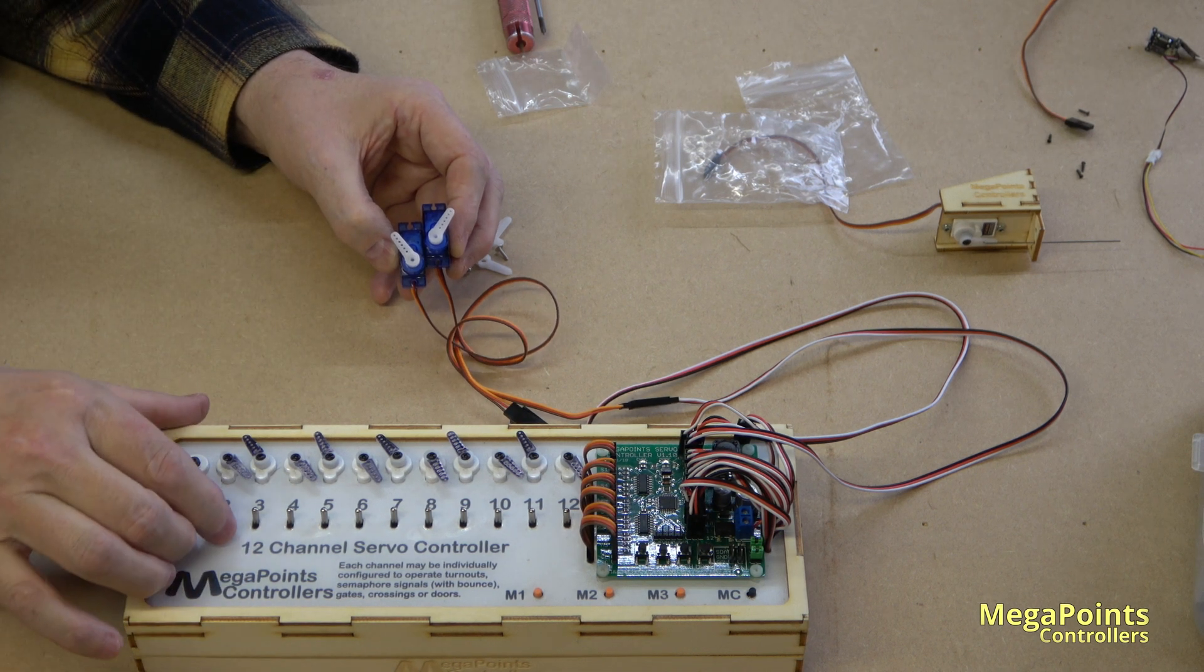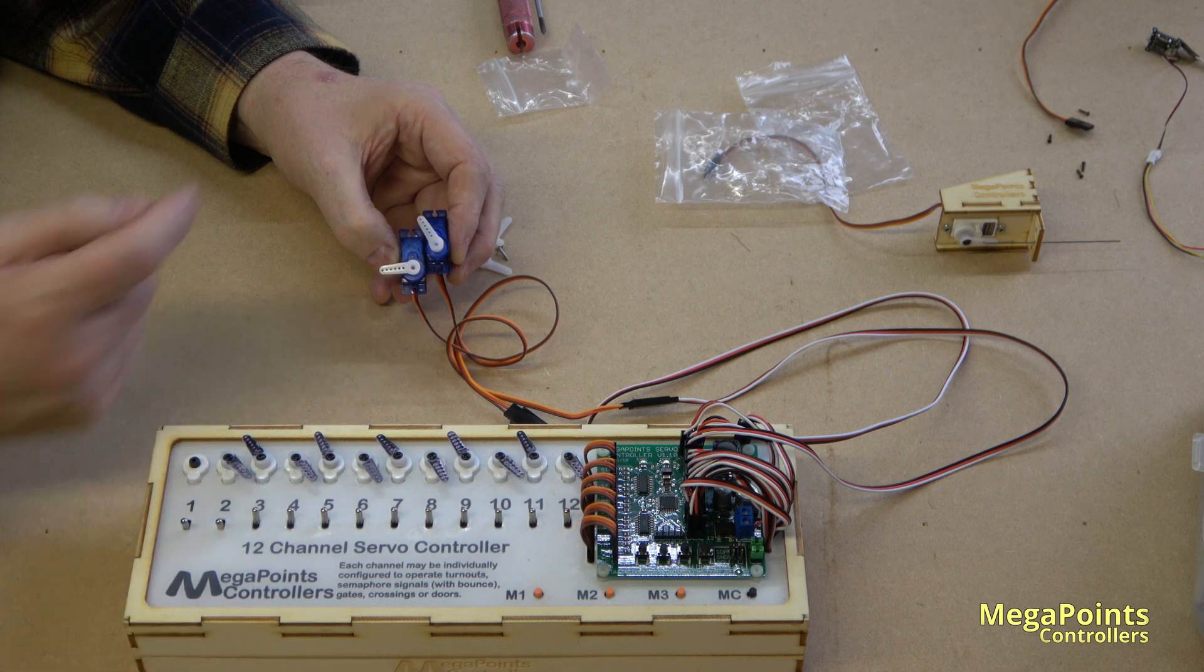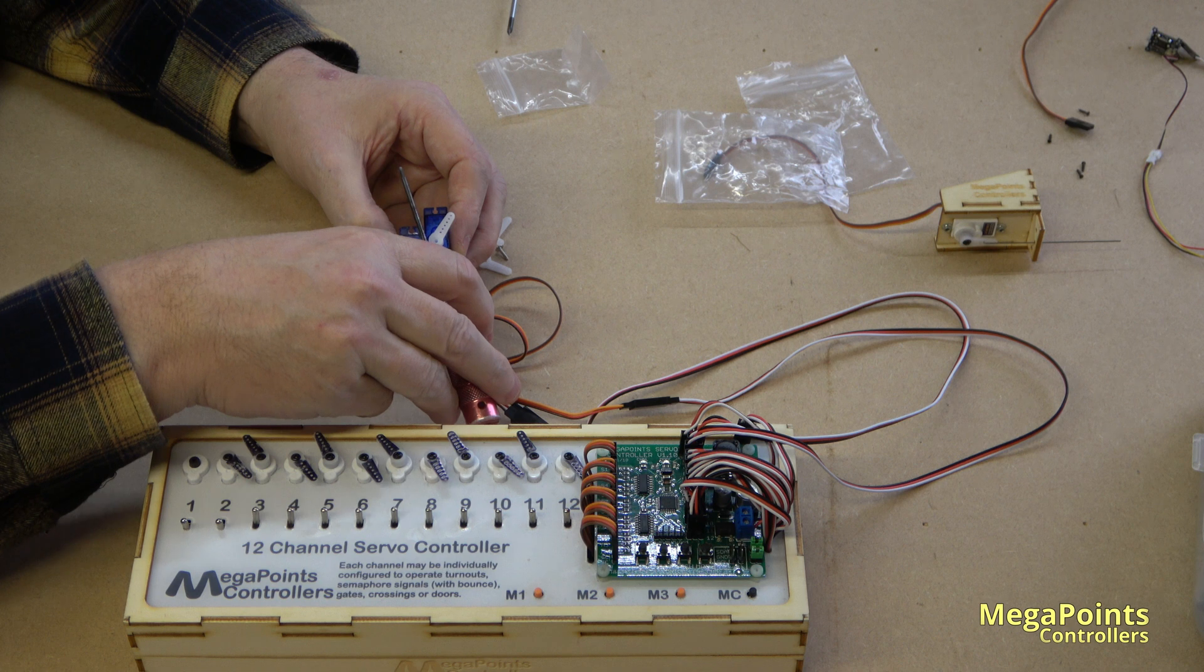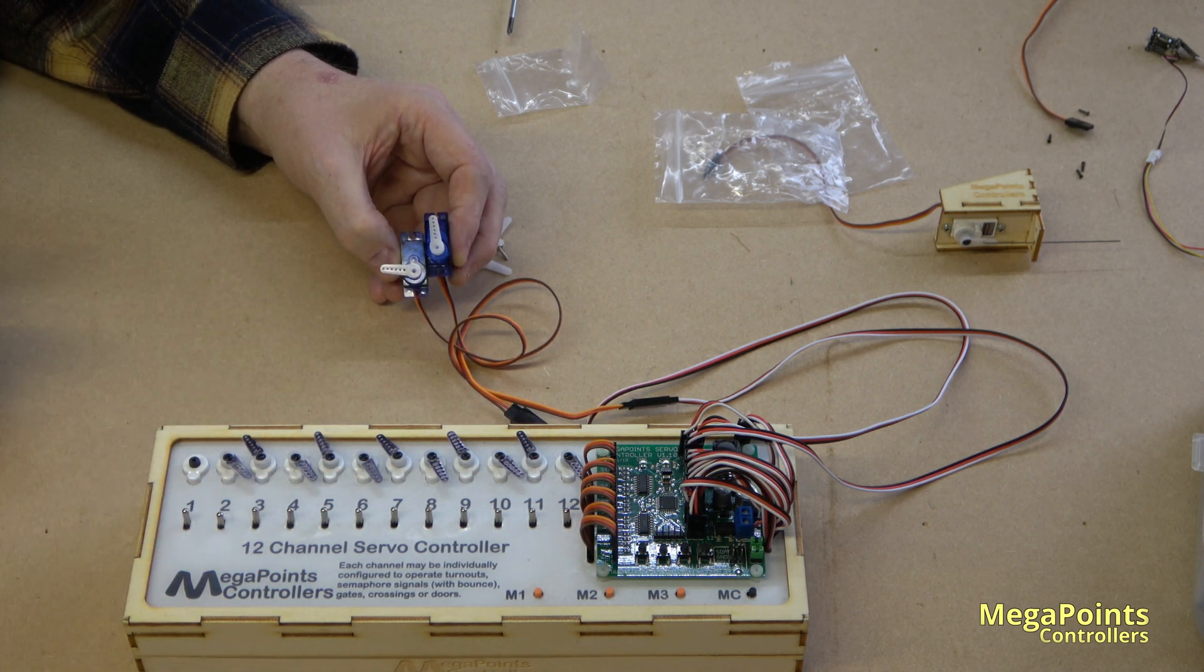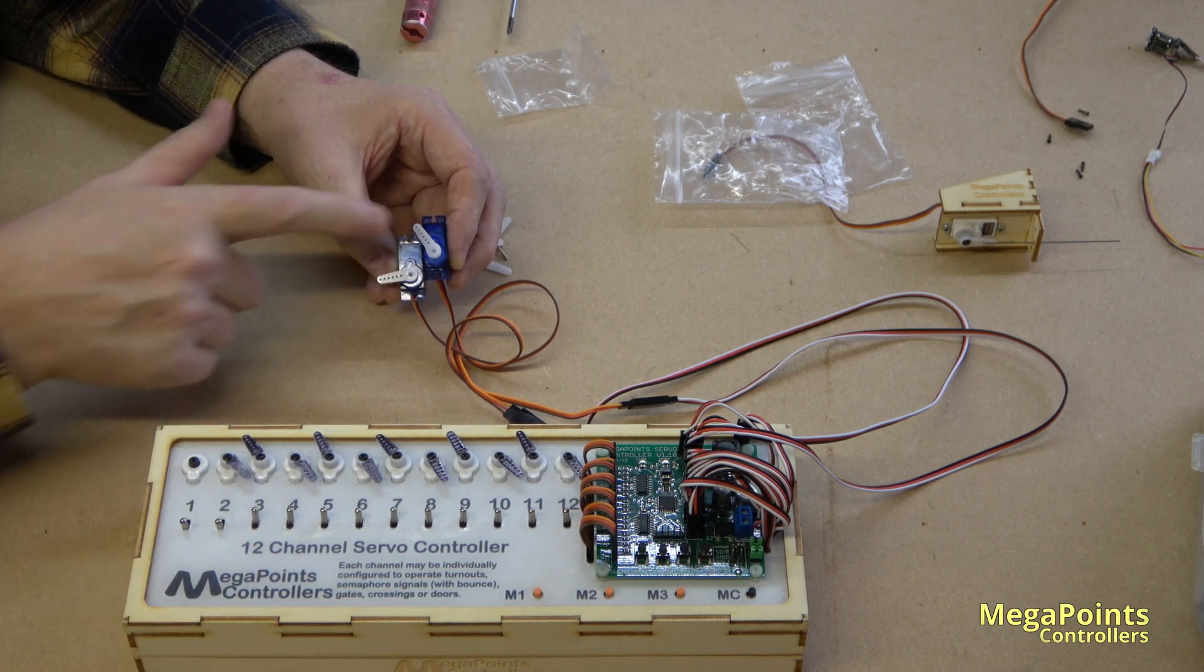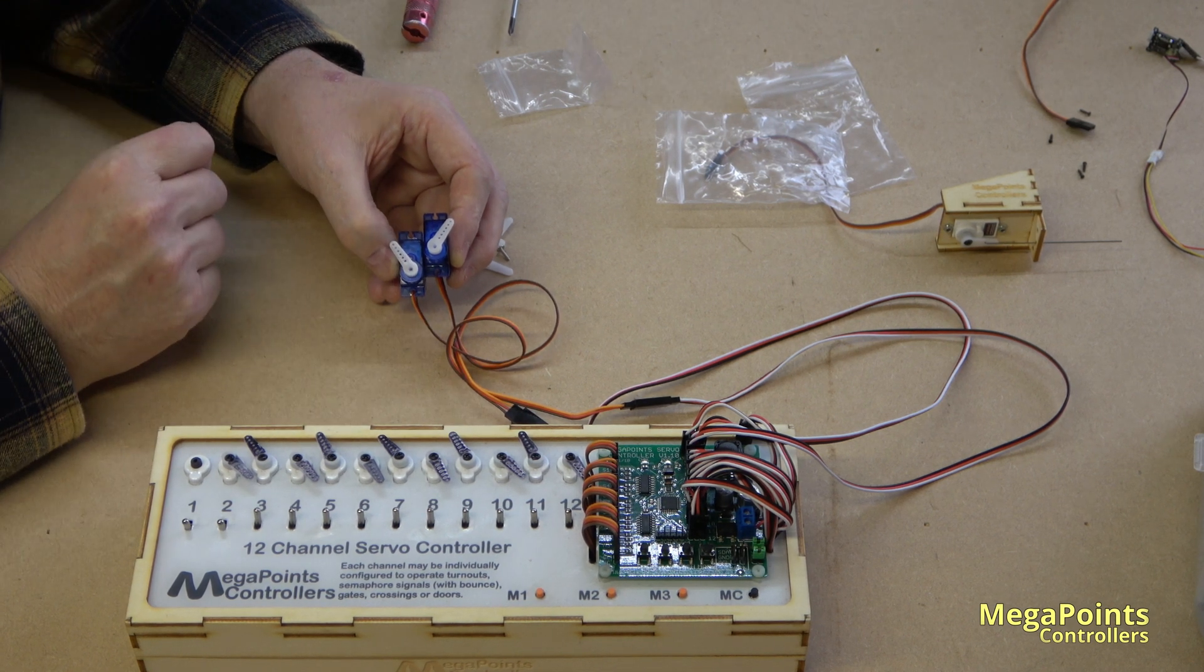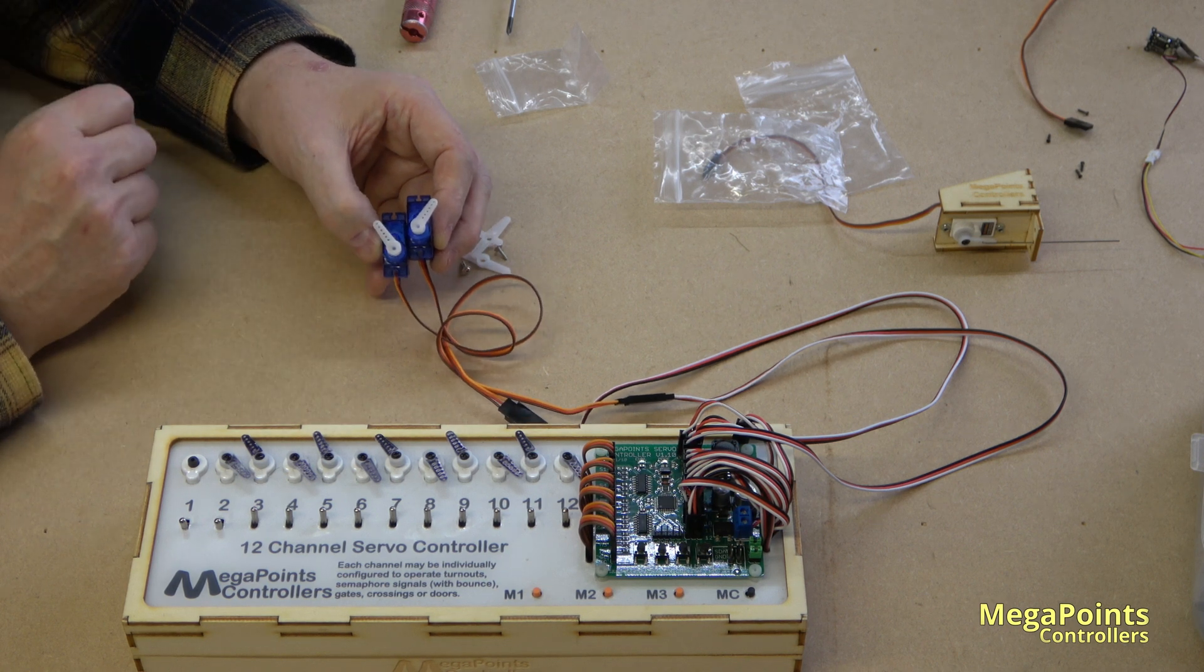If I throw them though, look how differently they move. This guy is moving an equal amount either way, and this guy's hanging off to one side. So this would produce an even movement on a set of points. This guy's just going to be a bit of a garbled mess, and the reason for that is probably I failed to centre the servo.